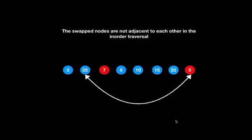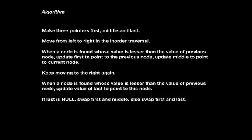Now let us look into the case where the swapped nodes are adjacent to each other. Apply the following algorithm using three pointers: first, middle, and last. Move from left to right in the inorder traversal. When a node is found whose value is lesser than the previous node, update first to point to the previous node and middle to point to the current node. Keep moving right; if another such violation is found, update last to point to that node. If last is null, swap first and middle; otherwise swap first and last.